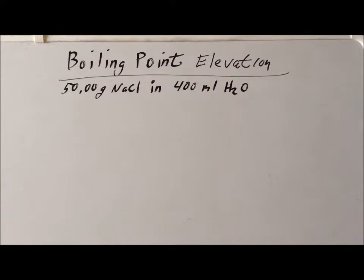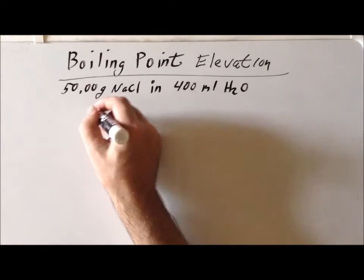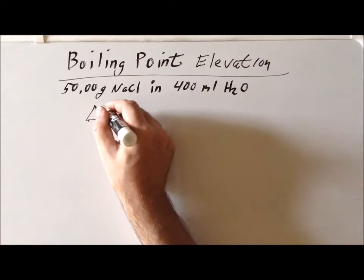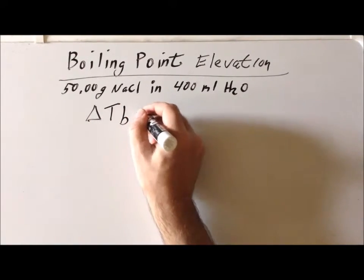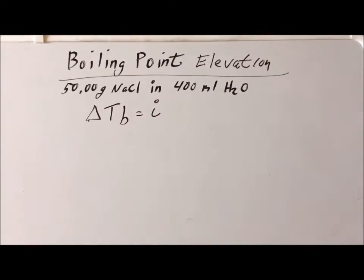Recall the formula that we need to use to find the new boiling point involves determining the change in the boiling point from pure water to water with an electrolyte dissolved in it. We use the following formula: the change in the boiling point is equal to i, which we call the Van't Hoff factor.